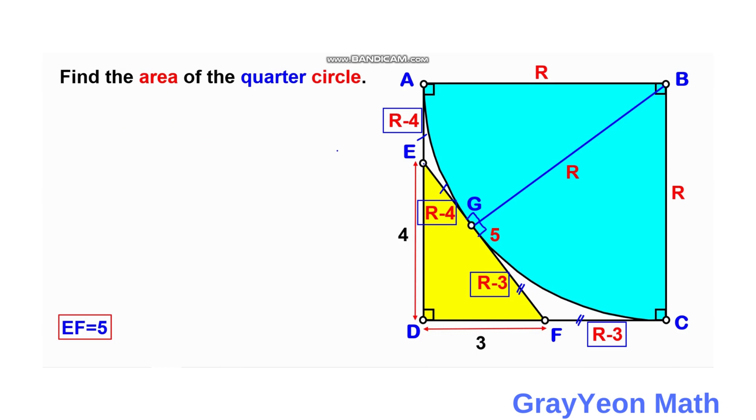The total length of EF is actually 5 units. And its parts are actually represented in terms of R: R minus 4 plus R minus 3. Simplifying this, we have 2R minus 7 is equal to 5. If you add 7, 2R is equal to 12. So R is equal to 6 units.